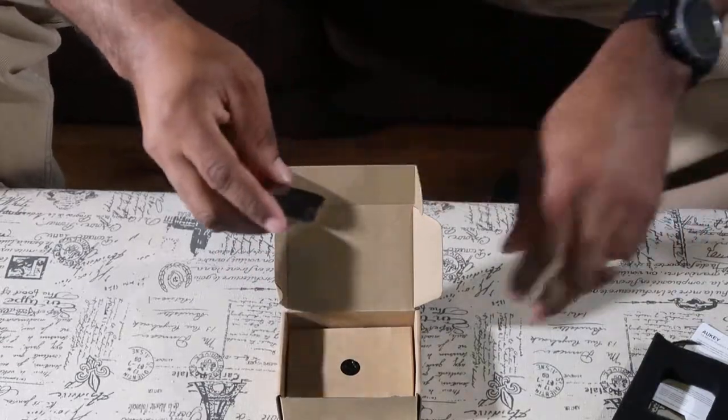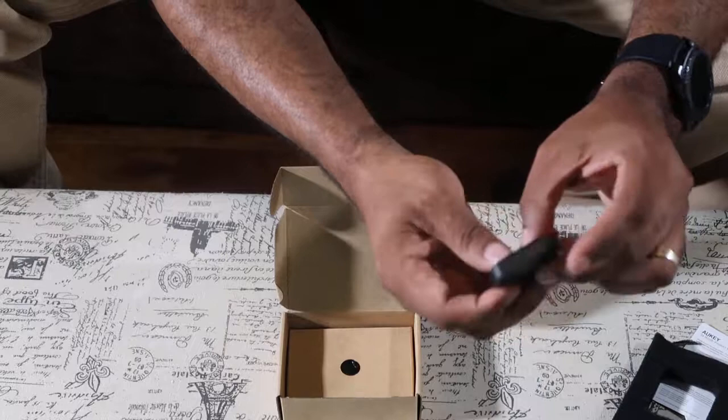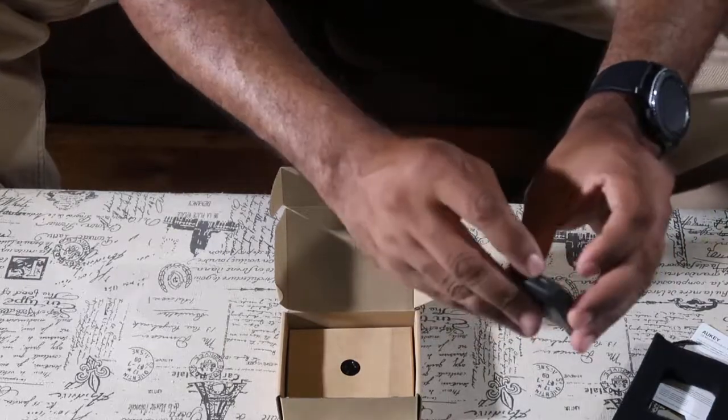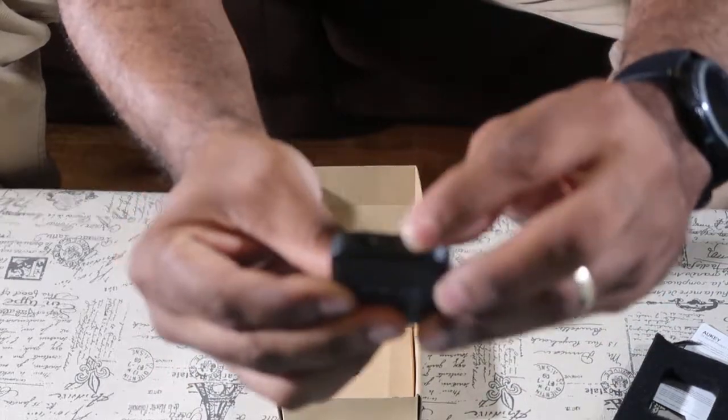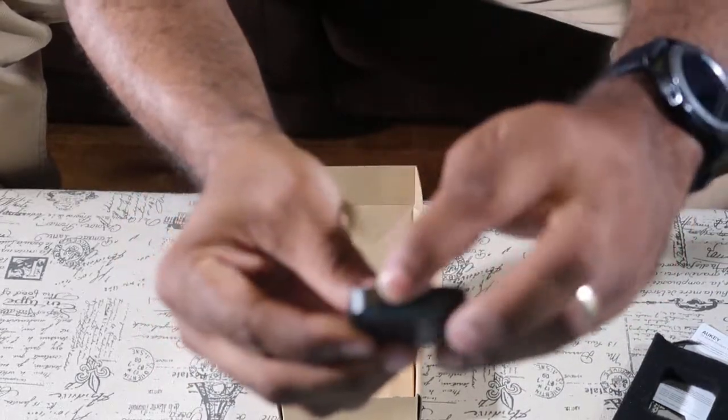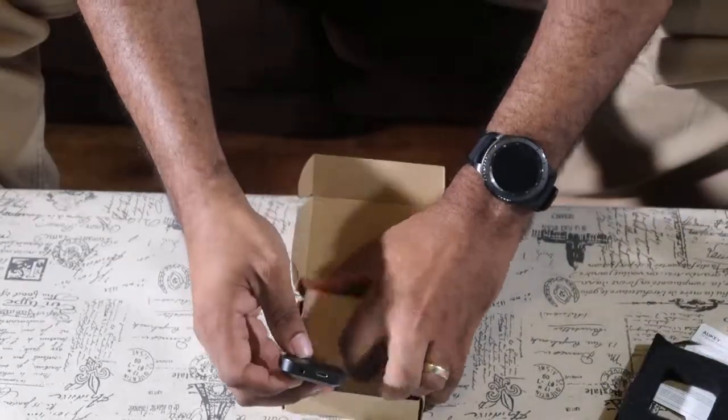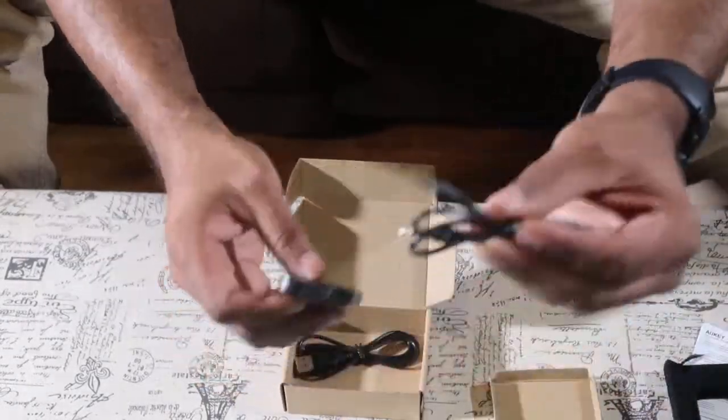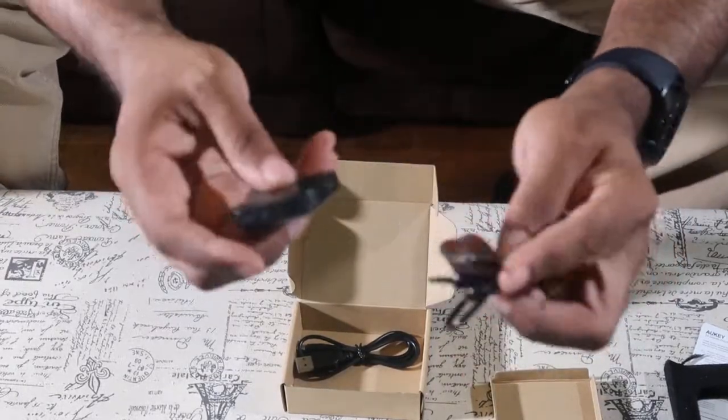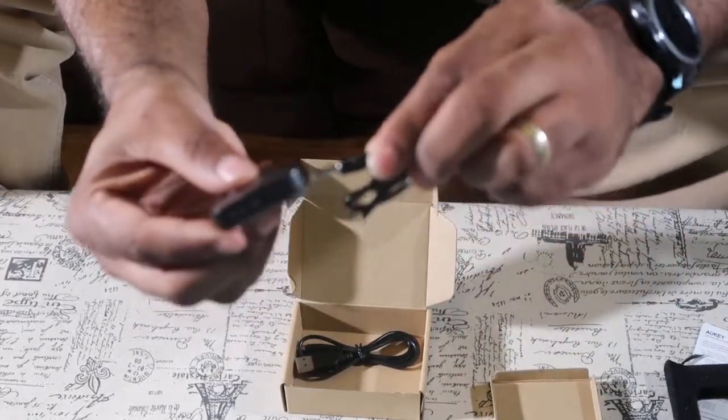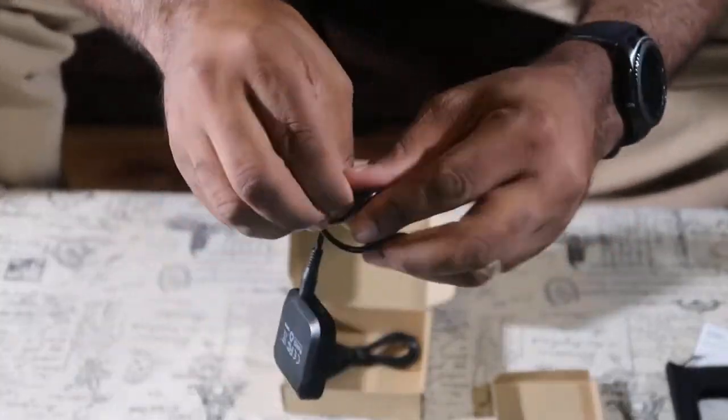All right, this is an Aukey 2-in-1 transmitter. It looks like you have USB charging port right here and 3.5 millimeter jack, so you can plug your 3.5 millimeter jack. They have it in here, they got the 3.5 millimeter cords. Plug into there, bam. There you go. And then this other end right here will go into the TV.